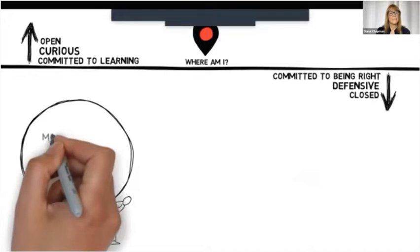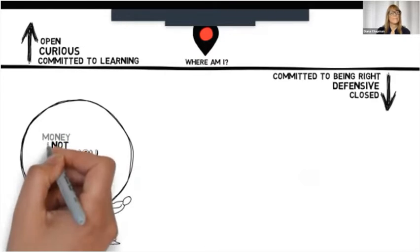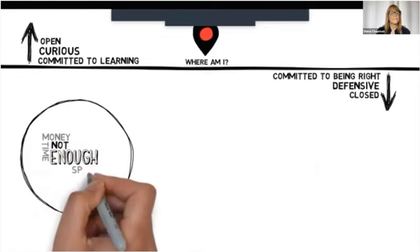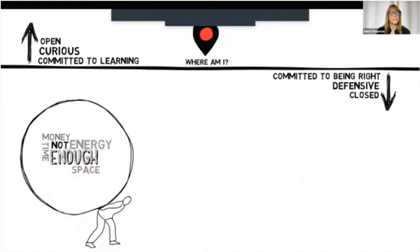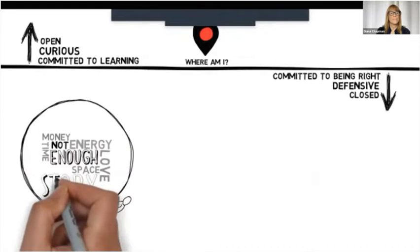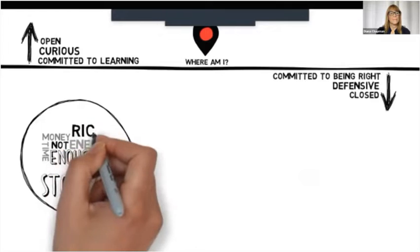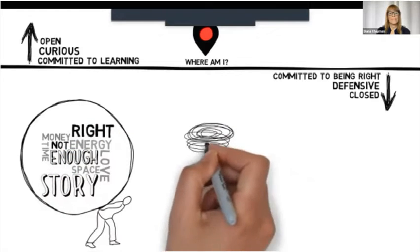For example, they believe there is not enough—it could be that there's not enough money or time or space or energy or love. People below the line also believe that their story about the situation is right.